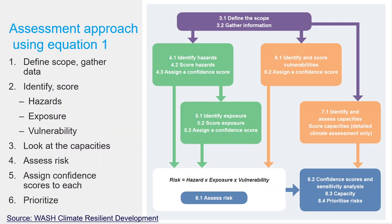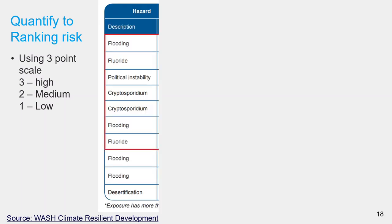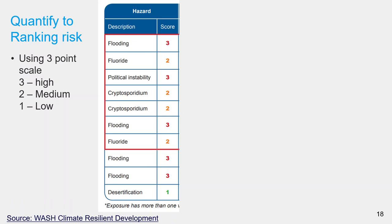To quantify and rank different risks, we need a rating scale — in this case a three-point scale: one for low, two for medium, and three for high. We start by listing all the important hazards, for example flooding, fluoride in drinking water, political stability, and so on. Then we score each of these hazard events, remembering that hazard has both a magnitude and probability. A word of caution: at this stage, do not mix in attributes related to exposure and vulnerability. For example, the fact that the environment is highly vulnerable to desertification should not affect your scoring of the desertification hazard itself.